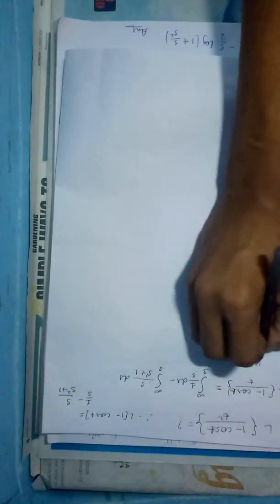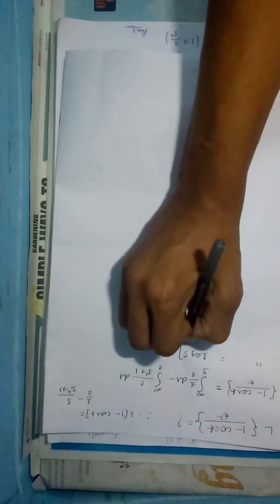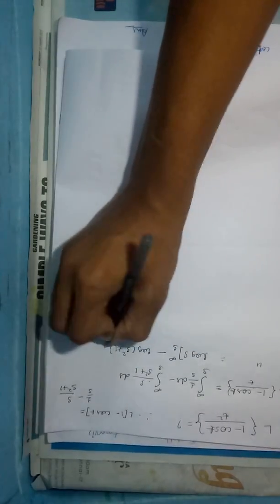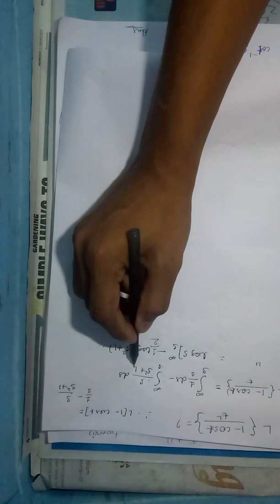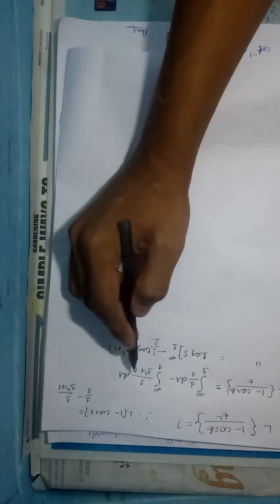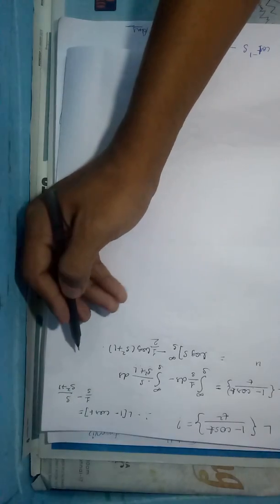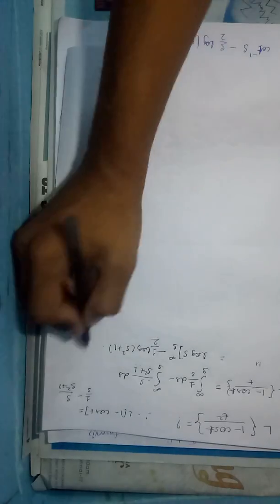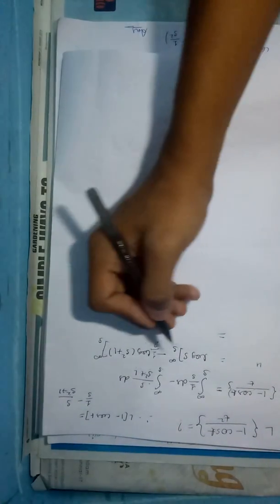Now this integration is nothing but log s, evaluated from s to infinity, minus the integral of s/(s² + 1), which gives (1/2) log(s² + 1). We can find this integration by substituting t = s² + 1, differentiating, and so we get (1/2) log(s² + 1), with limit s to infinity.